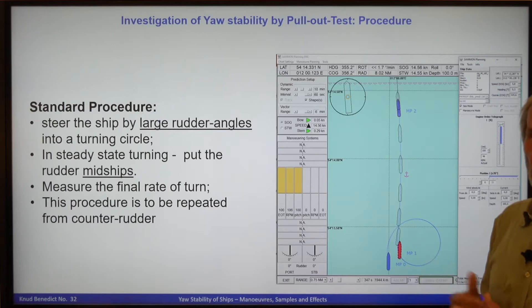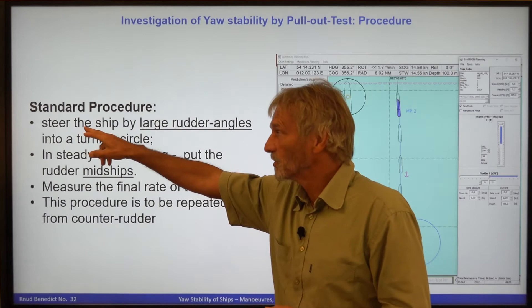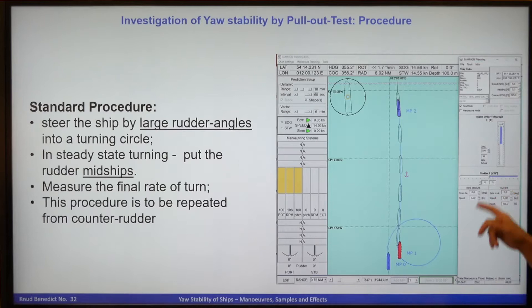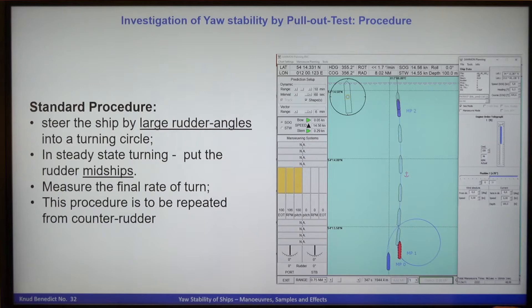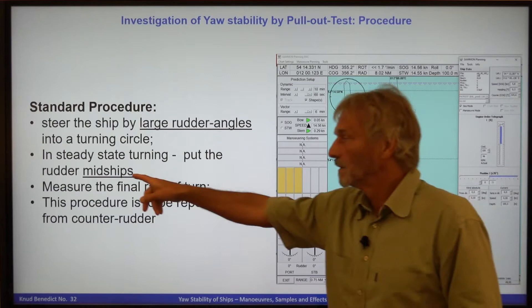The first item is to describe the procedure for how to do a pull-out maneuver. The standard procedure is to steer the ship by a large rudder angle — for instance, using full rudder into a turning circle. When the ship has reached a steady state turning motion with constant rate of turn and speed, the rudder should be put midships.